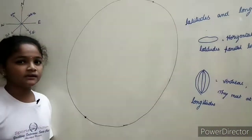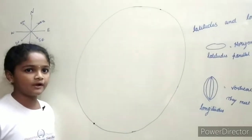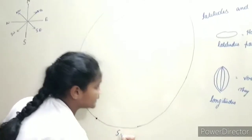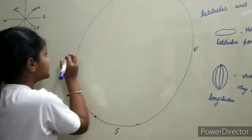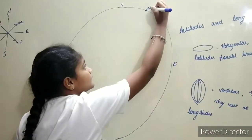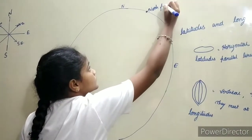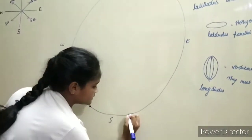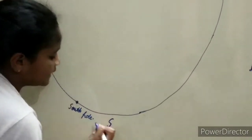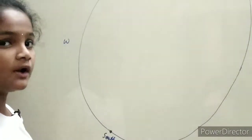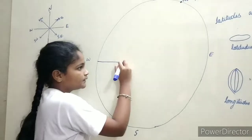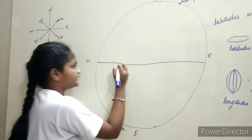Our Earth is divided into four hemispheres: Northern Hemisphere, Southern Hemisphere, Eastern Hemisphere, and Western Hemisphere. This is North Pole and this is South Pole. In between the North and South Pole, the largest circle or latitude is the Equator.